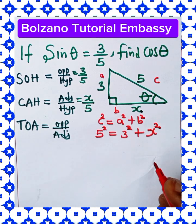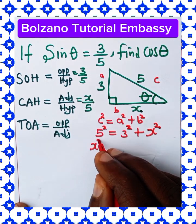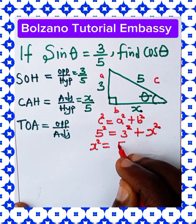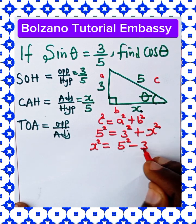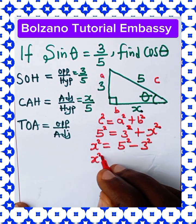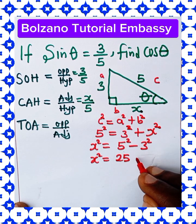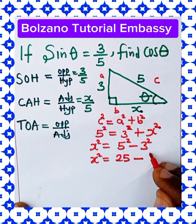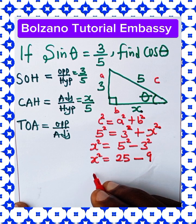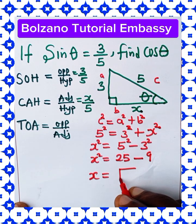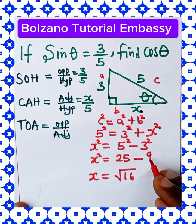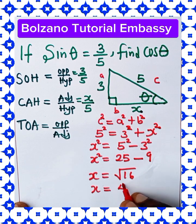Now to find the value of x, x squared becomes 5 squared minus 3 squared. X squared equals 25 minus 9. Therefore, x equals the square root of 16, which is 4.